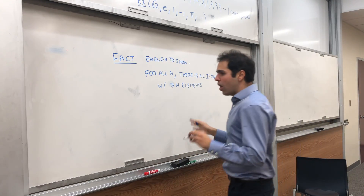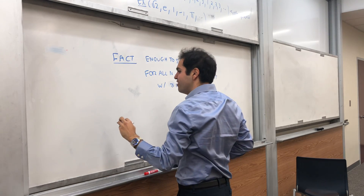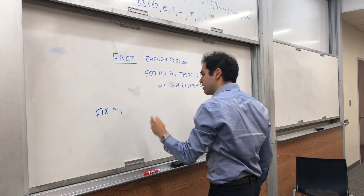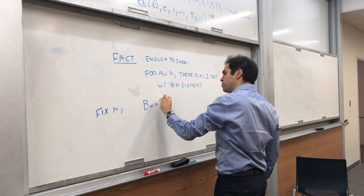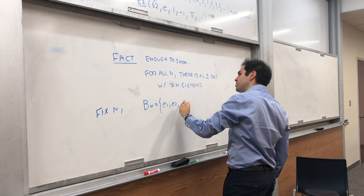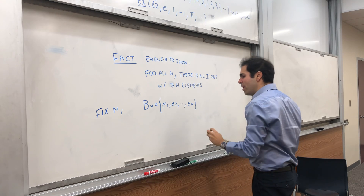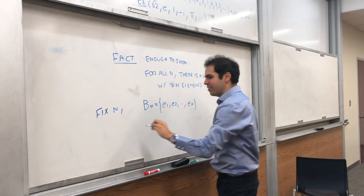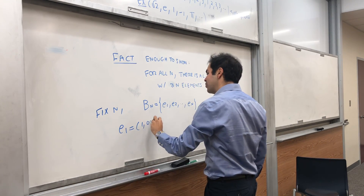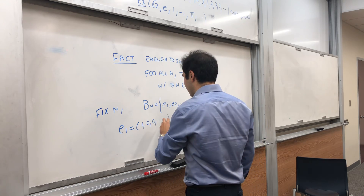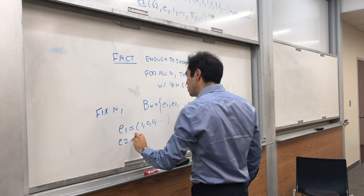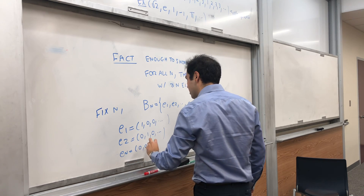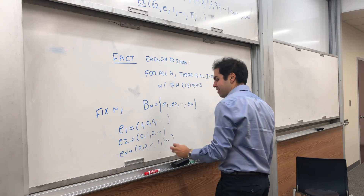So how do we show R∞ is infinite dimensional? Fix n, and let B_n be the set {e₁, e₂, ..., eₙ}, where these are the analogs of standard basis vectors. e₁ is the sequence 1, 0, 0, 0, ... ; e₂ is 0, 1, 0, 0, ... ; and eₙ is 0, 0, ..., 0, 1, 0, 0, ... with a 1 only in the nth slot.